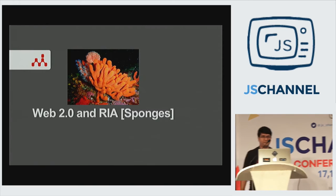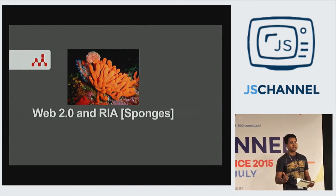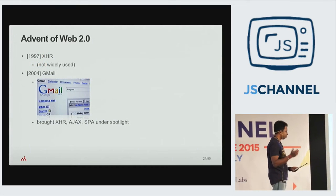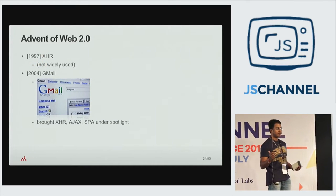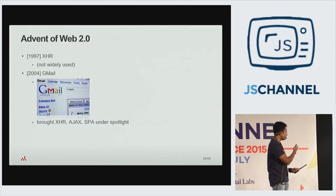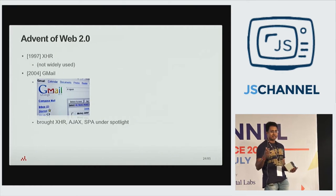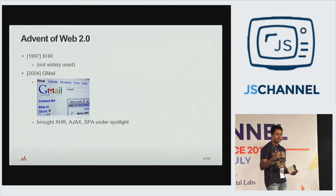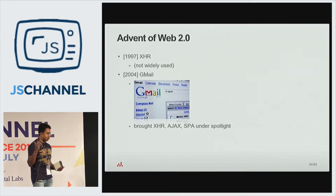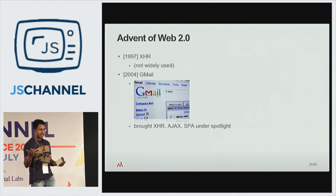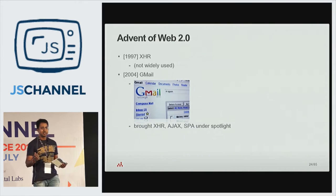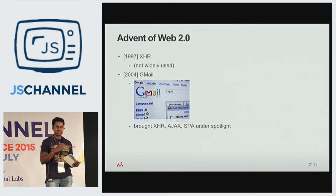Now comes the era of Web 2.0 and rich Internet applications, brought to the fore by Gmail coming out in 2004 with a UI that offered the first desktop-like interaction on a web application with no full-page reload. This caught on quite well, and everyone wanted to use Ajax. XHR, even though it had been around since 1997, really only got leveraged from this point onwards.